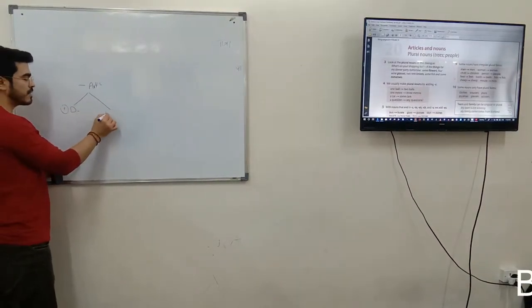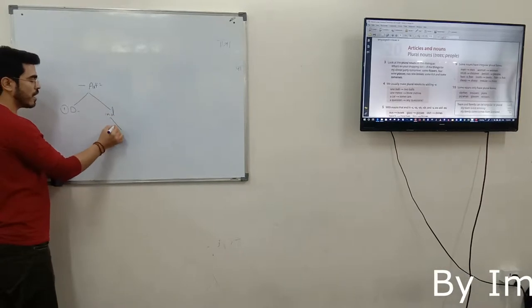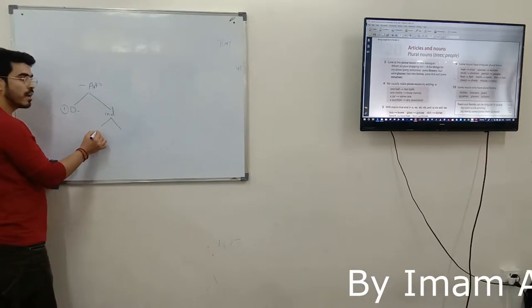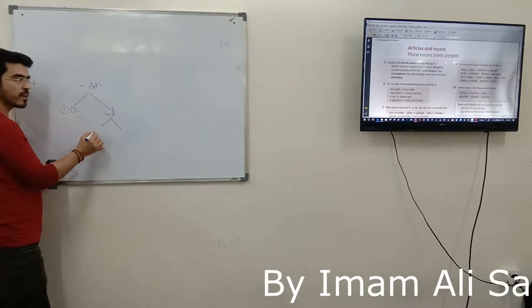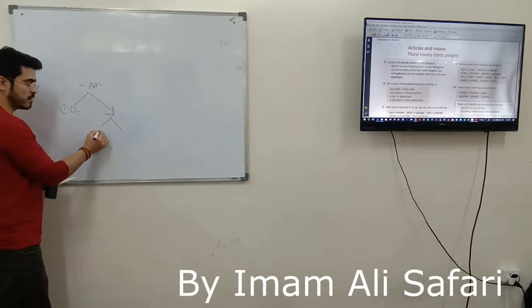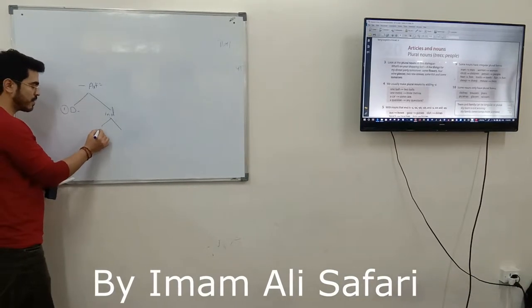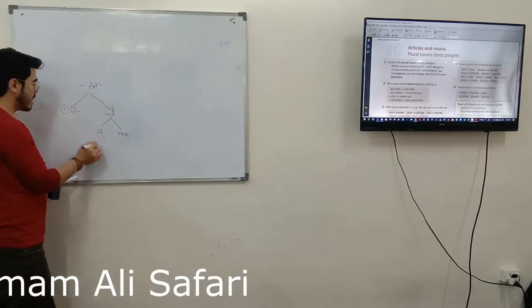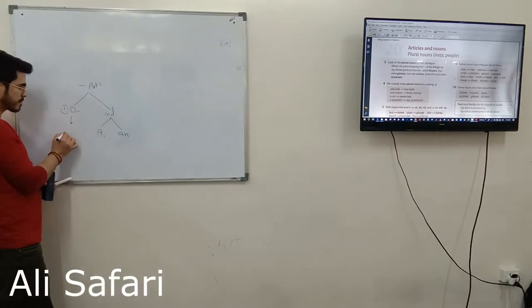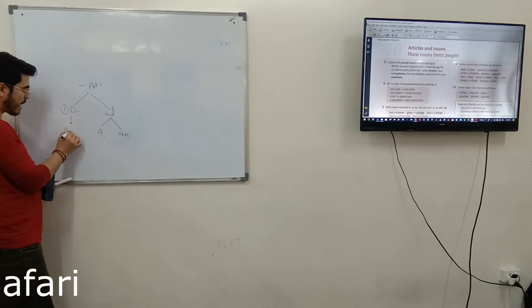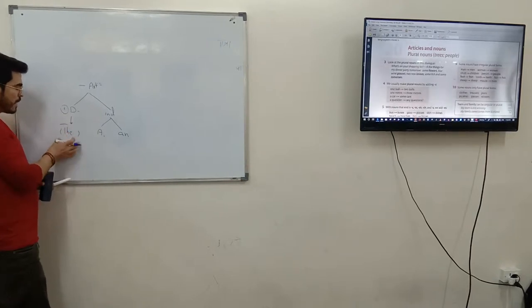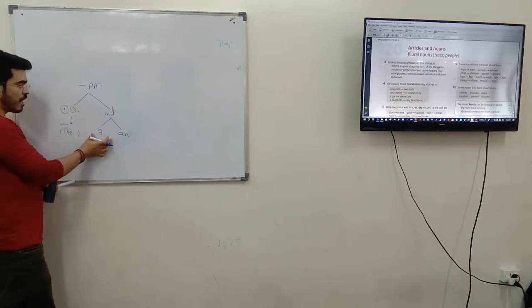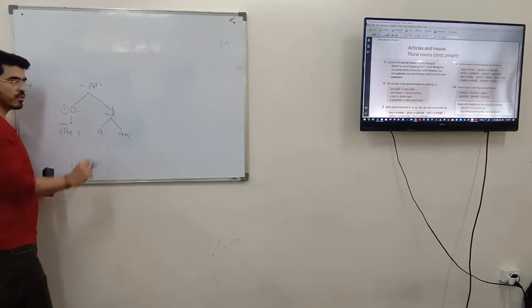Definite article and indefinite article. Indefinite articles are? What are indefinite articles? Excellent, come on tell me, come on guys. A and an. And what was the definite article? The, excellent. So the is definite article, A and an are called indefinite articles.